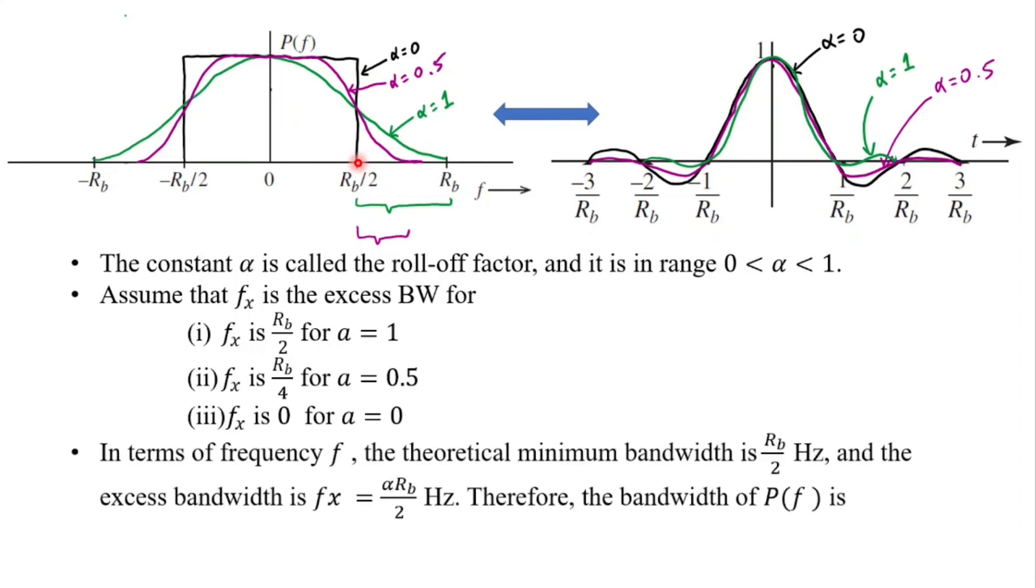So in terms of frequency the theoretical minimum bandwidth is Rb by 2 hertz. And the excess bandwidth is fx which is equal to alpha Rb by 2 hertz. Hence the transmission bandwidth Bt is simply the minimum bandwidth that is Rb by 2 and fx that is excess bandwidth which is alpha Rb by 2. So this is simplified as 1 plus alpha times Rb by 2.